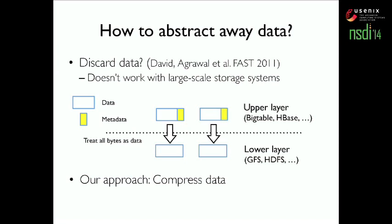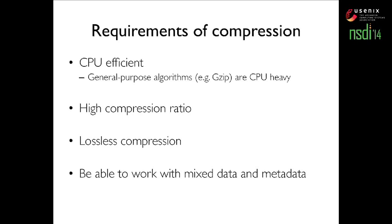Our answer is that we should compress data instead of completely discarding it. Since compression is a well-studied field, we wonder whether we can use existing algorithms like GZIP. To answer this, let me first present the requirements of our compression algorithm. The first requirement is that our algorithm should be CPU-efficient, because we don't want to replace our bottleneck with a new CPU bottleneck. This actually rules out general-purpose algorithms like GZIP, because they are quite CPU-heavy.